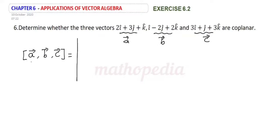Determinant. Now write the coefficients of A vector, B vector, and C vector. That is 2, 3, 1. 1, minus 2, 2. 3, 1, 3.